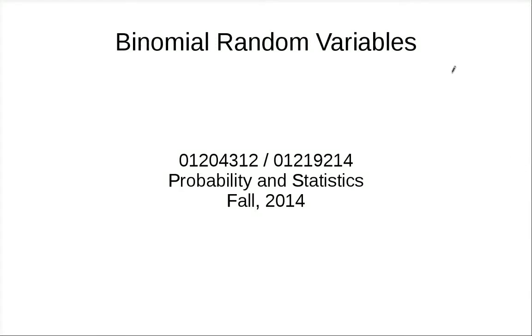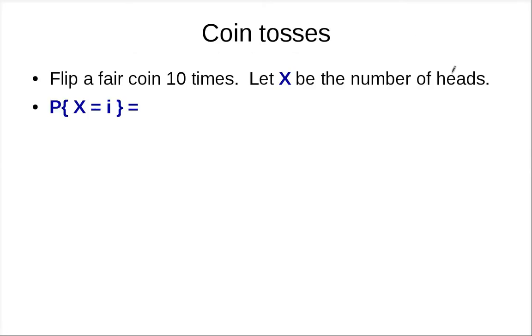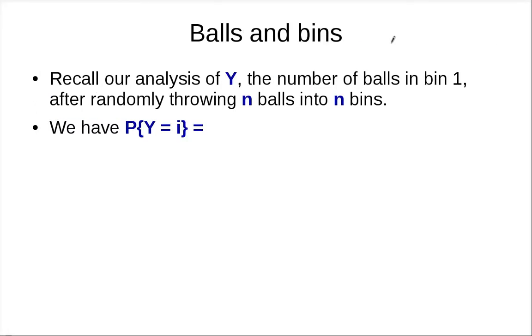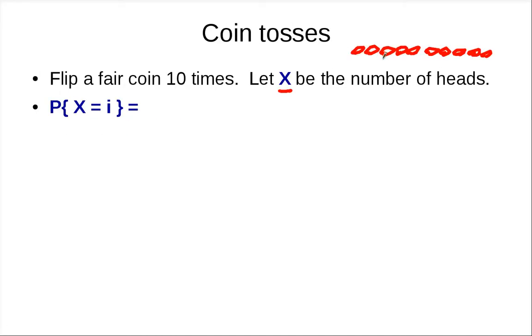In this clip we'll discuss an important class of random variables called binomial random variables. Let's start with an example. We have a fair coin and we flip it 10 times independently, and let x be the number of heads. We'd like to compute the probability that x equals i — that is, the probability that out of 10 coin tosses, you get exactly i heads.